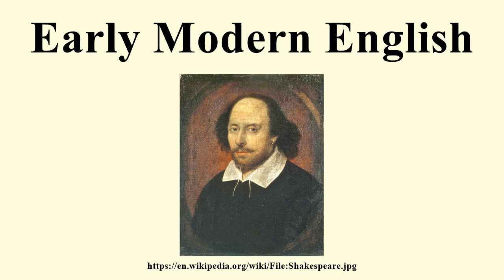Early Modern English orthography had a number of features of spelling that have not been retained. The letter S had two distinct lowercase forms: the short S (as used today), always used at the end of a word and many times in other parts of the word, and the long S, which could appear anywhere except at the end. The double lowercase S was variously written as S or SS. This is similar to the alternation between medial and final lowercase sigma in Greek.